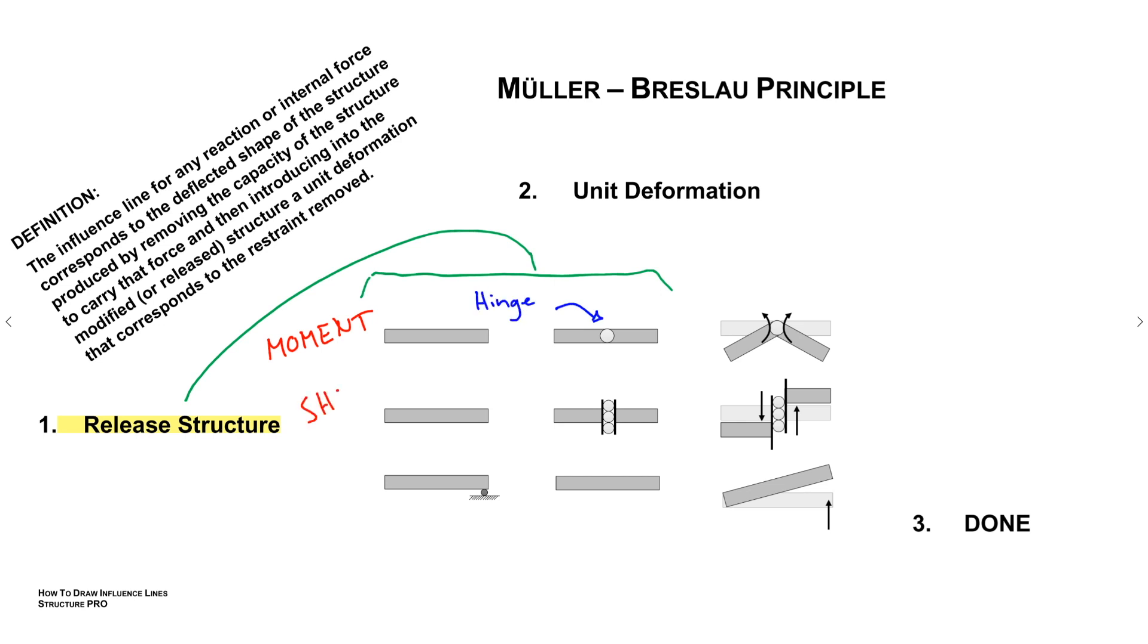Same thing in shear, we'll add this weird thing, I'll call it a vertical roller. And lastly, as a reaction, we are going to remove the restraint, alright? So in all these cases, what we're doing is we're taking away the ability of the structure to resist the thing that we're interested in, whether it's moment, shear, or having a reaction.